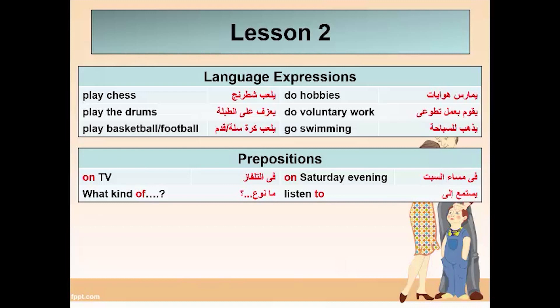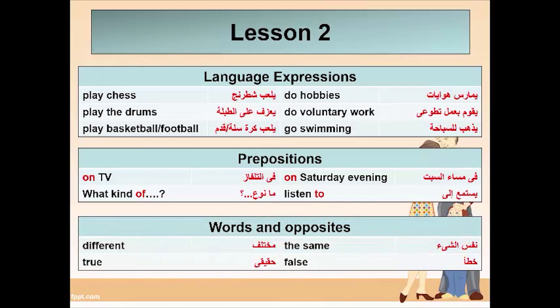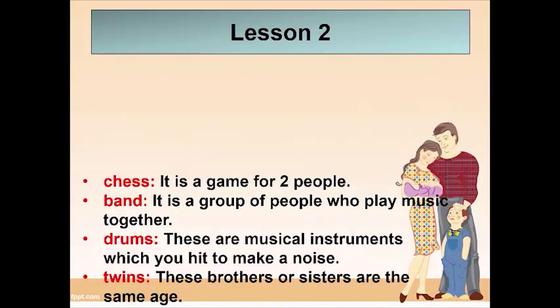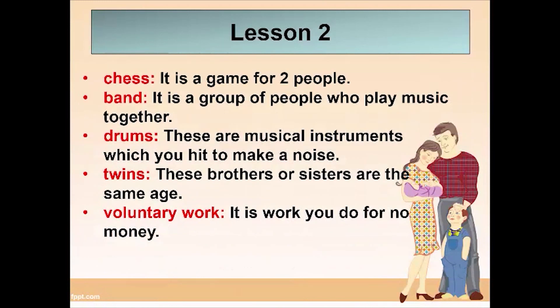We have words and opposites: different / the same, true / false. Here we have some definitions. Chess: it is a game for two people. Band: it is a group of people who play music together. Drums: these are musical instruments which you hit to make a noise. Twins: brothers or sisters who are the same age. Voluntary work: it is work you do for no money.